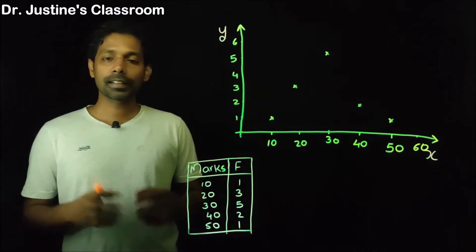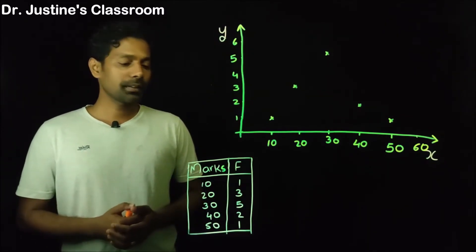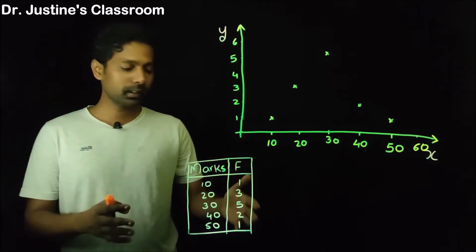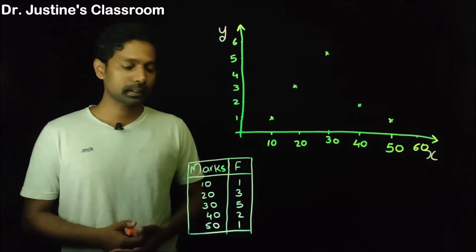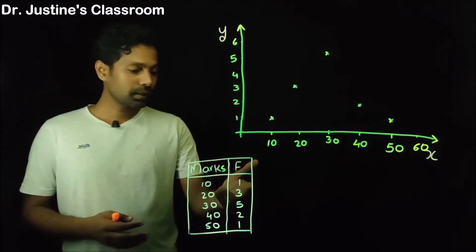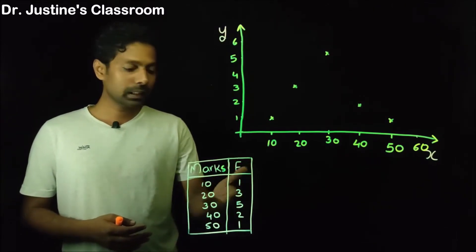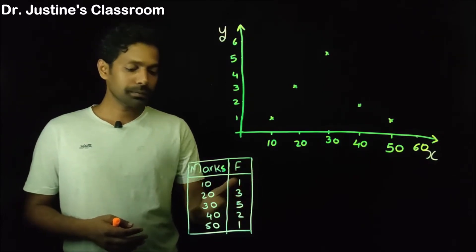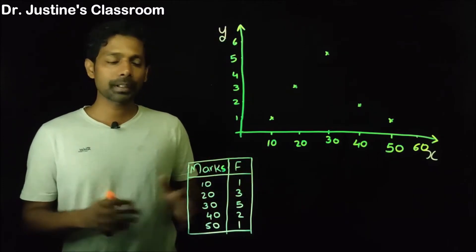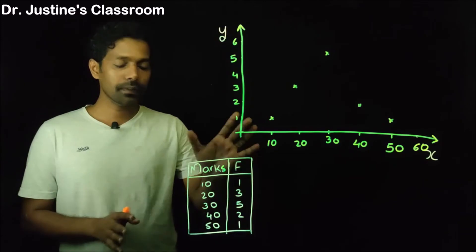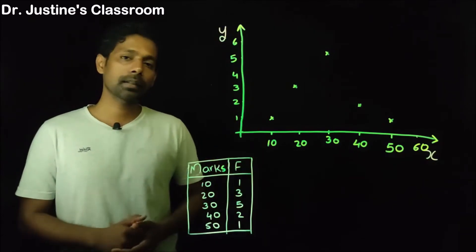Let us consider an example. Think about a dataset with 12 students. One of them got a score of 10, three of them got a score of 20, and five of them got a score of 30. Two of them scored 40, and one of them got a score of 50. So I have 12 students and their marks given in a frequency distribution pattern.